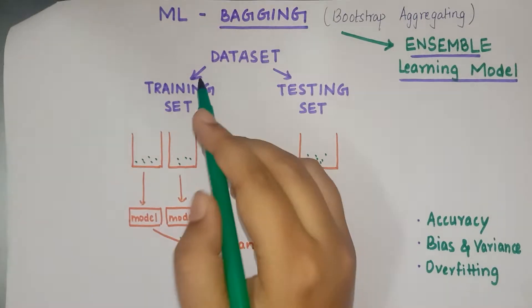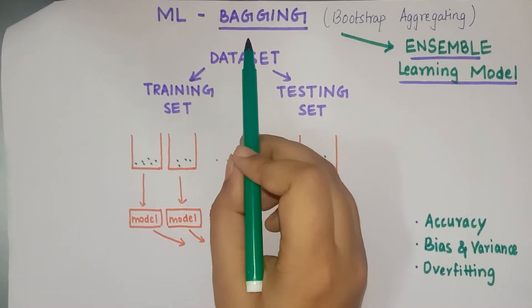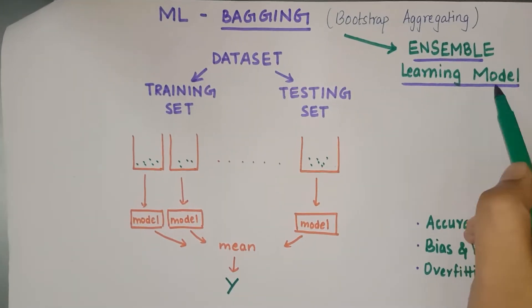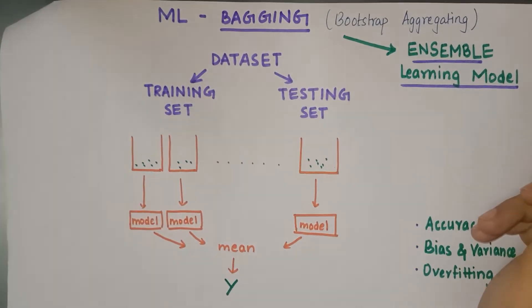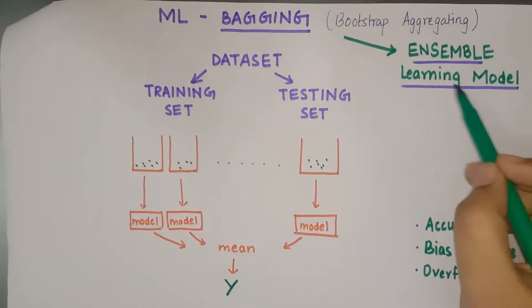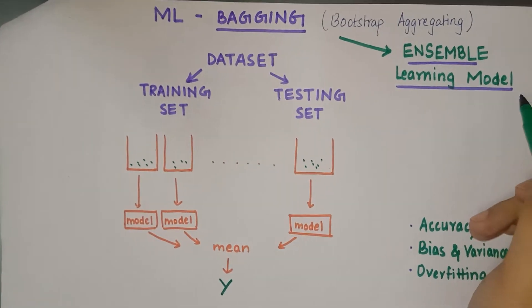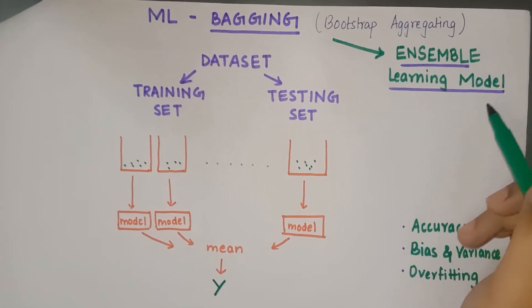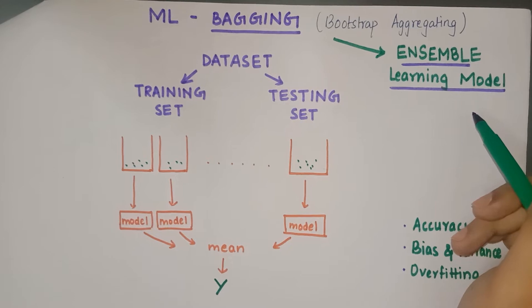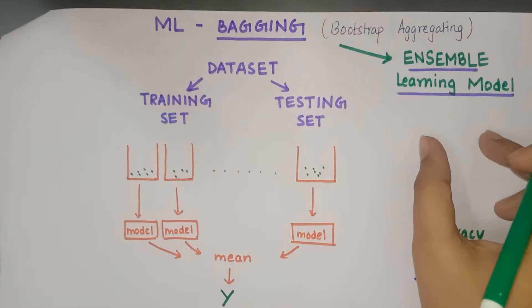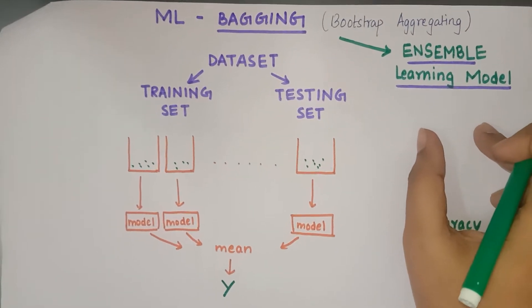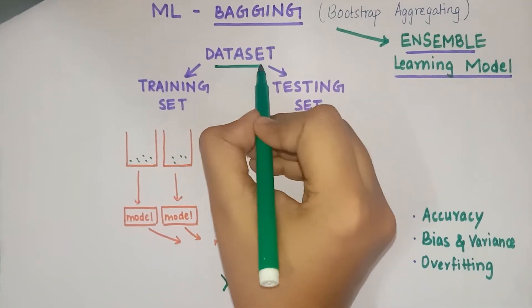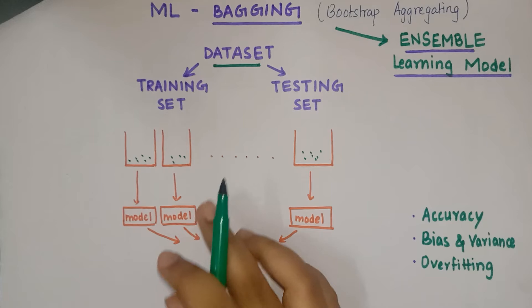Bagging is one of the topics that comes under ensemble learning. An ensemble learning model is a model that uses multiple learning algorithms together for a particular task.